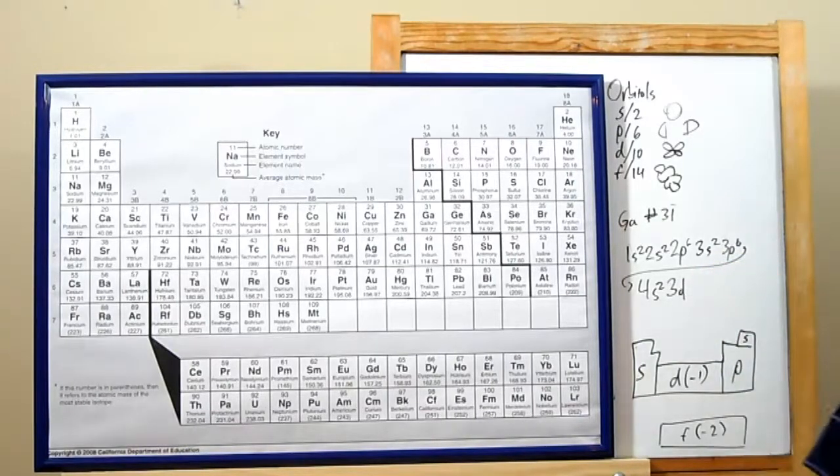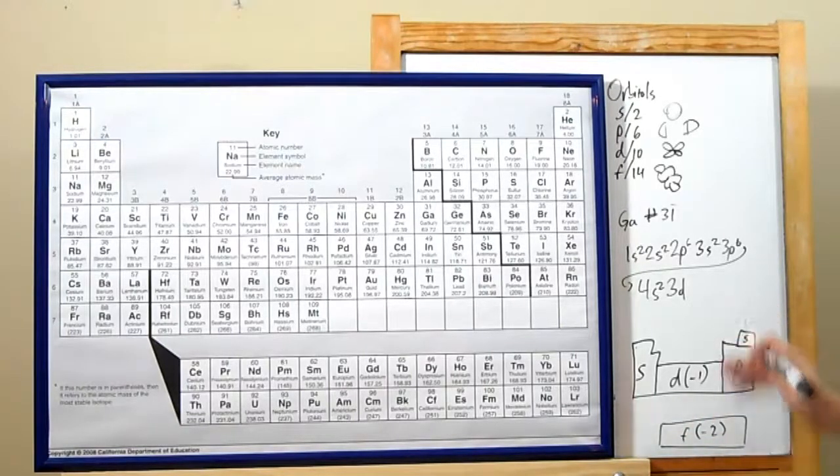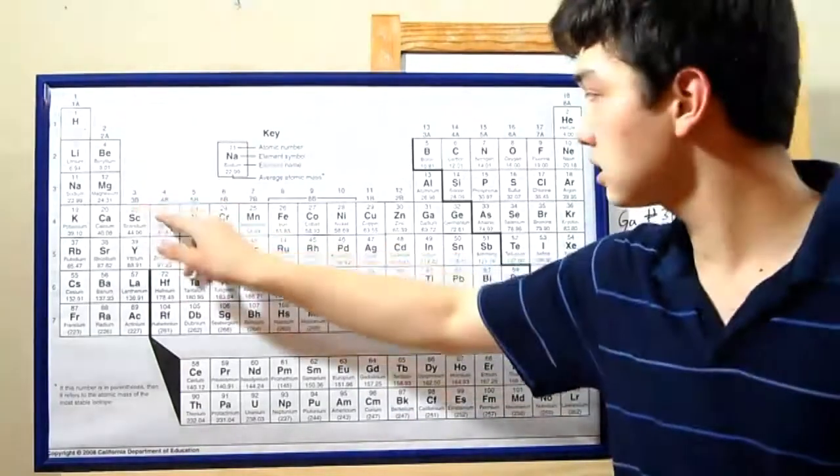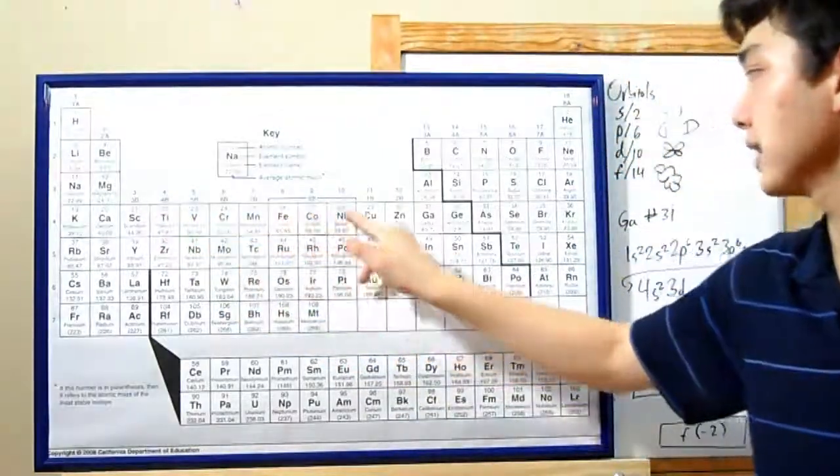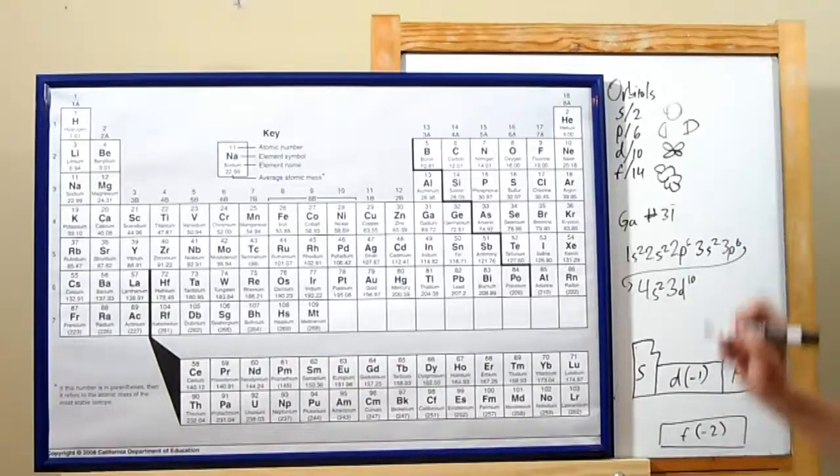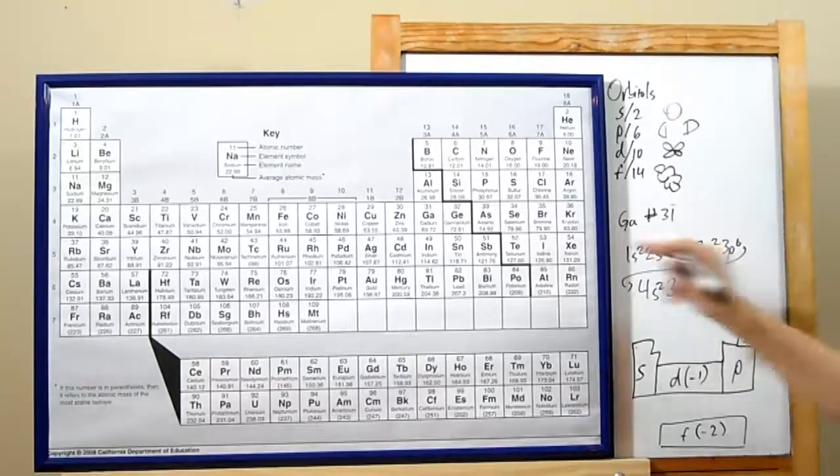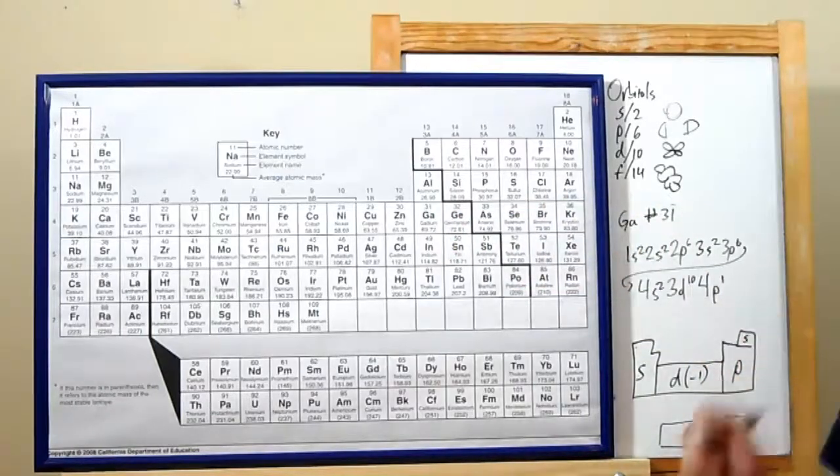A similar rule applies to the f-block once you get there. Instead of writing the number of your period, write down 2 less than that. So anyway, back to our example. 3d, 1, 2, 3, 4, 5, 6, 7, 8, 9, 10. d orbitals can hold up to 10 electrons. And now we're back to p orbitals. So same as your period, 4p, 1. And that's gallium.